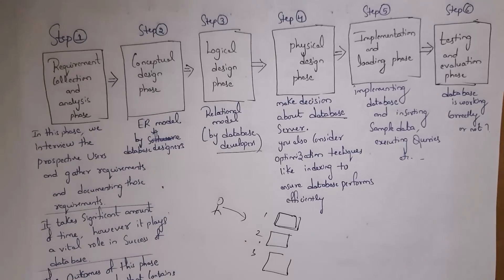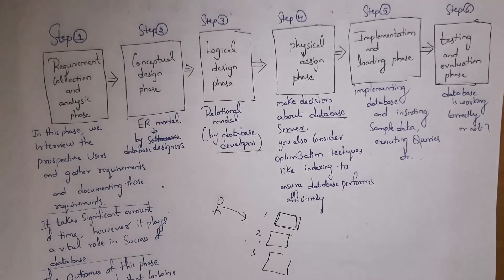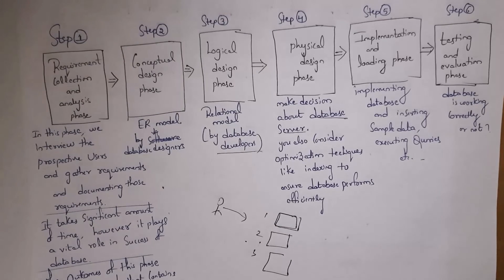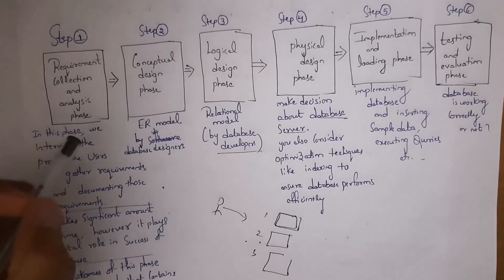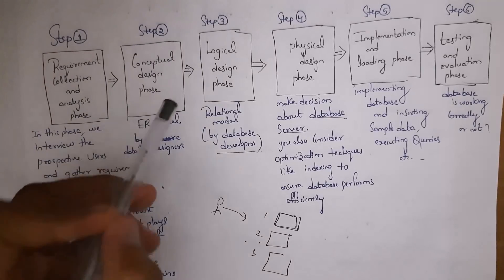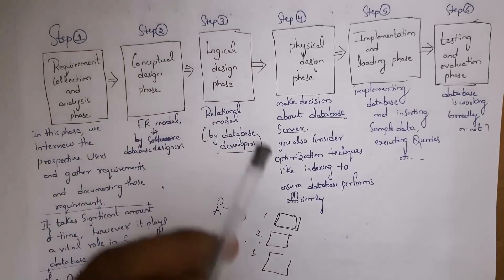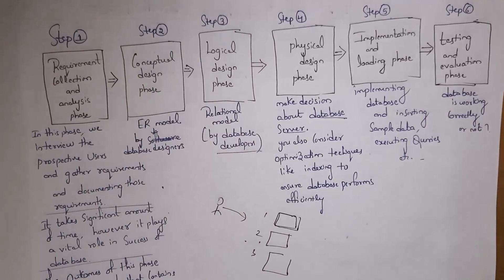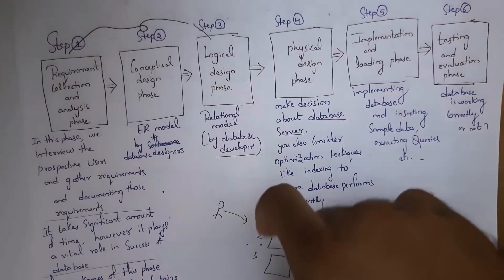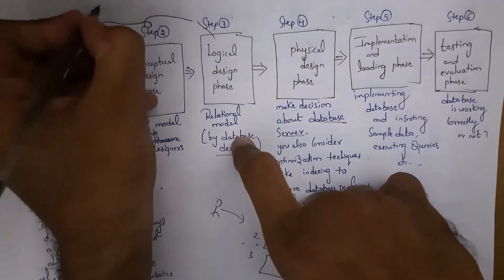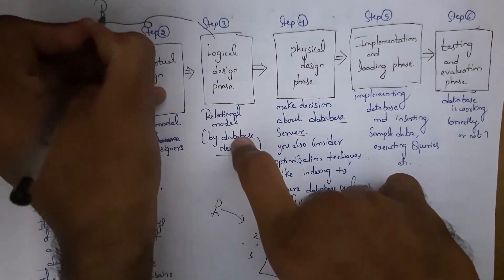The last phase is testing and evaluation. In this phase we check whether the database is working correctly or not. Notably, the requirement collection and analysis phase, the conceptual design phase, and the logical design phase — these three phases are all related to the ER model.